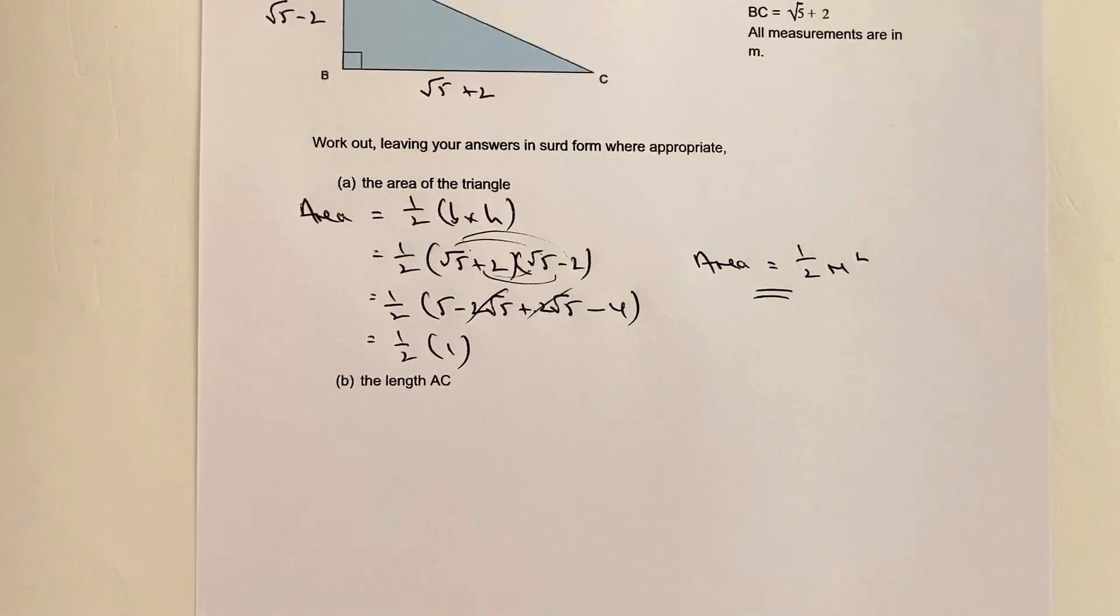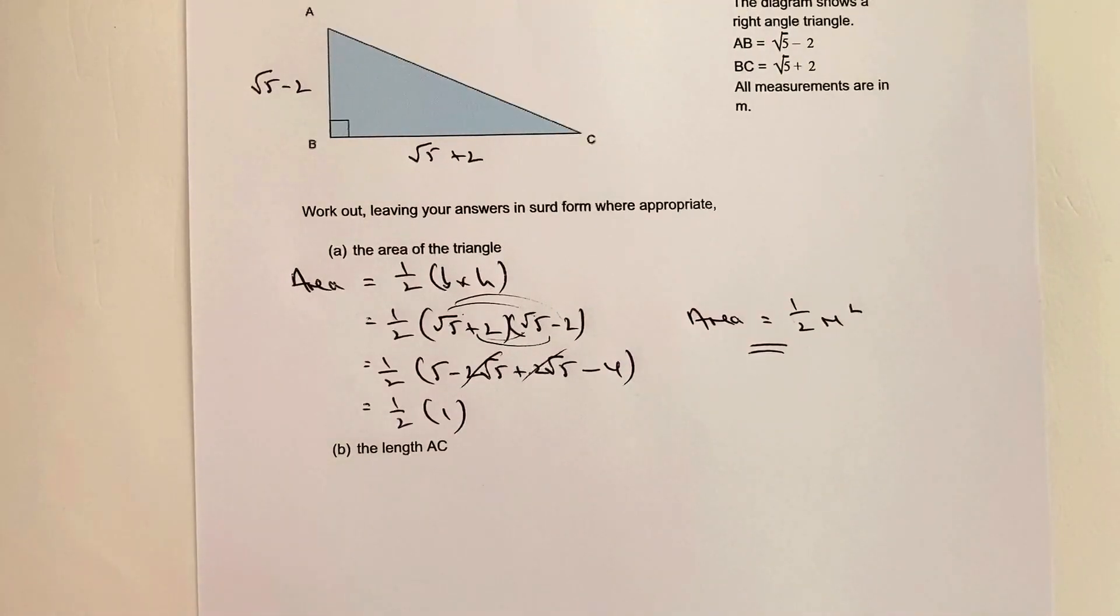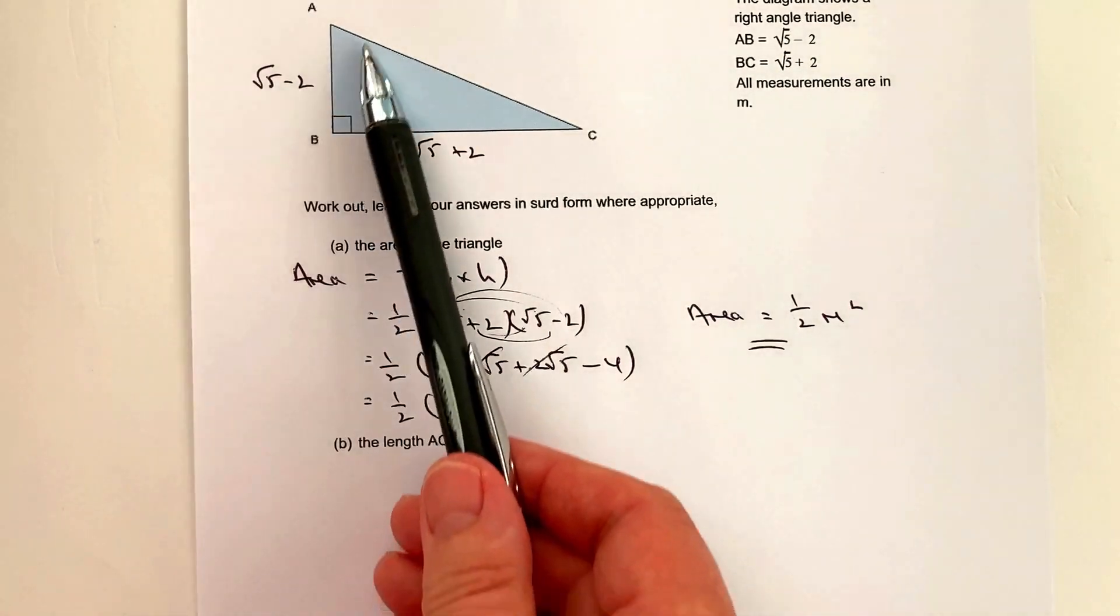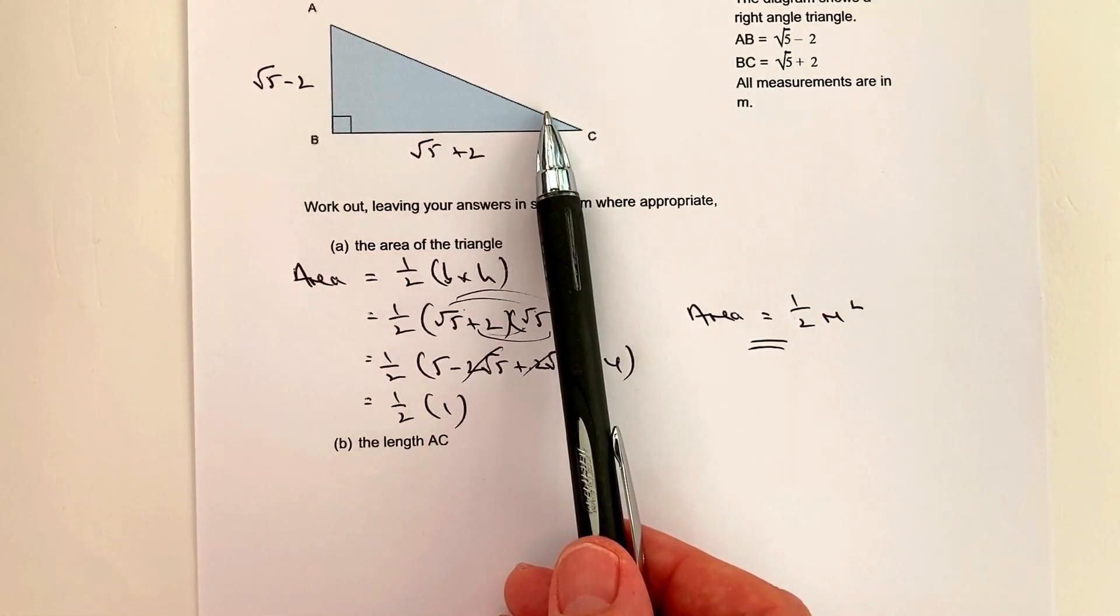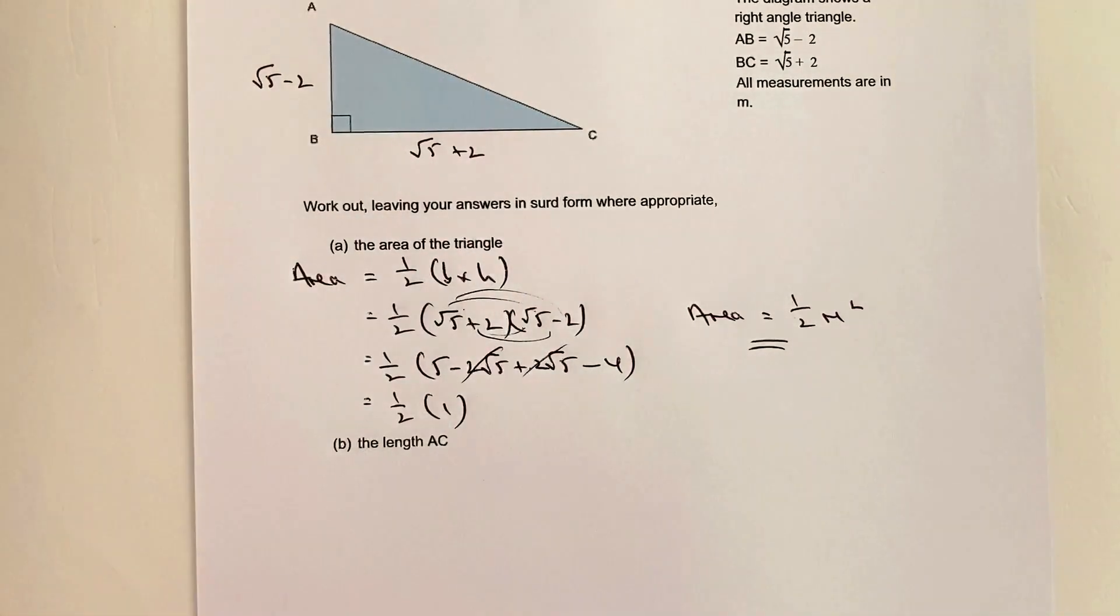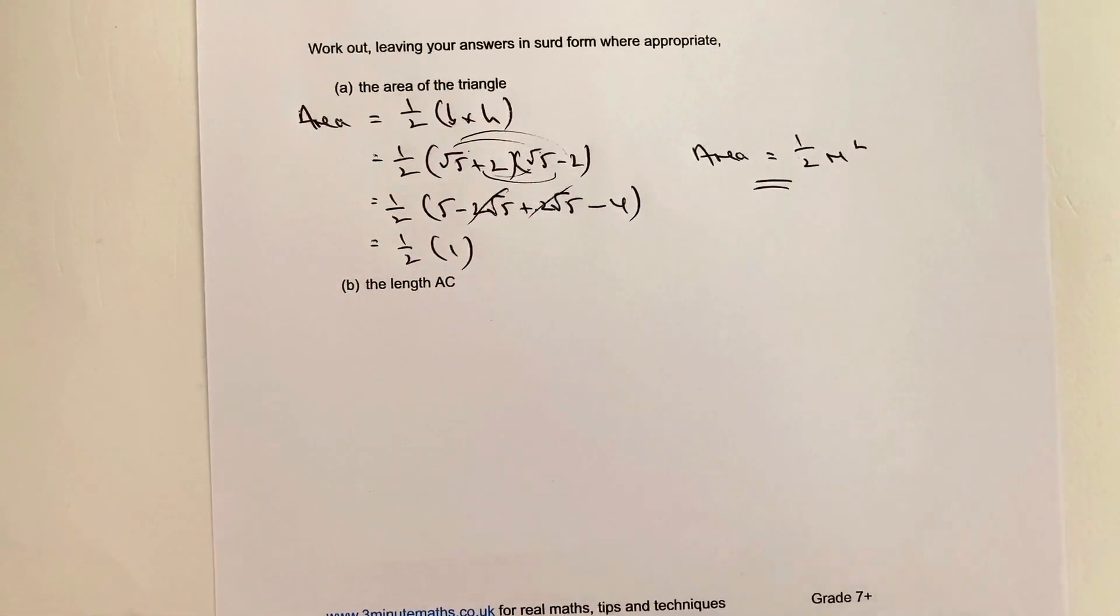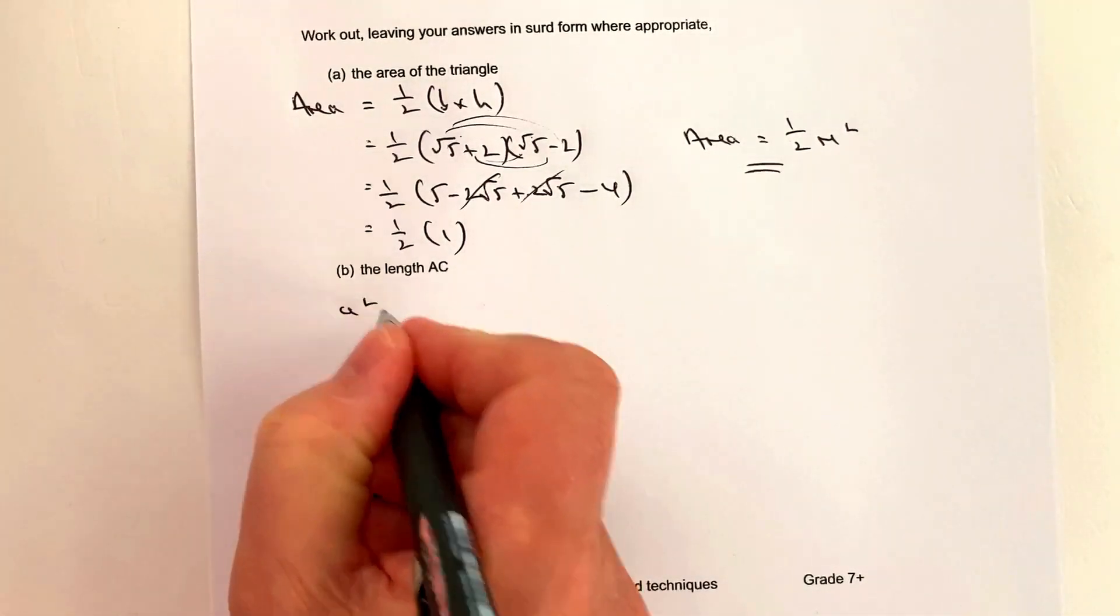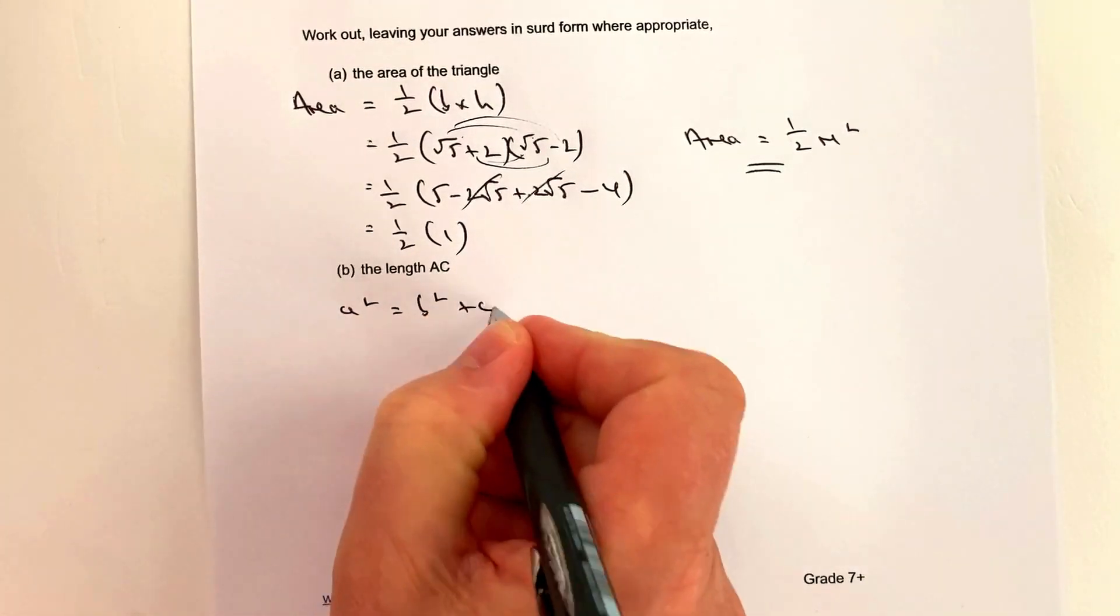Let's look at part B. We'll use Pythagoras since it's a right-angled triangle. AC squared is the sum of the other two sides squared. I'll write this as a² = b² + c².